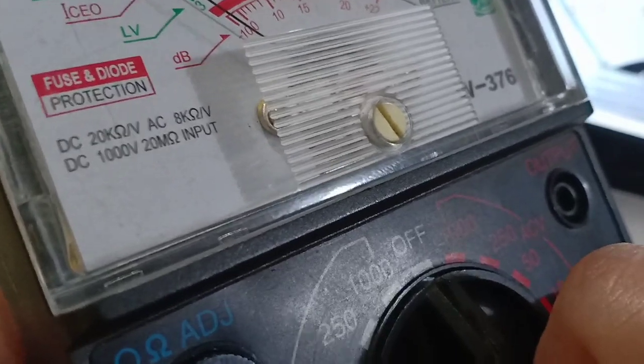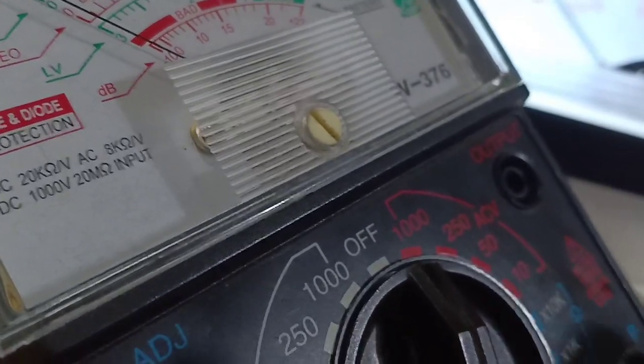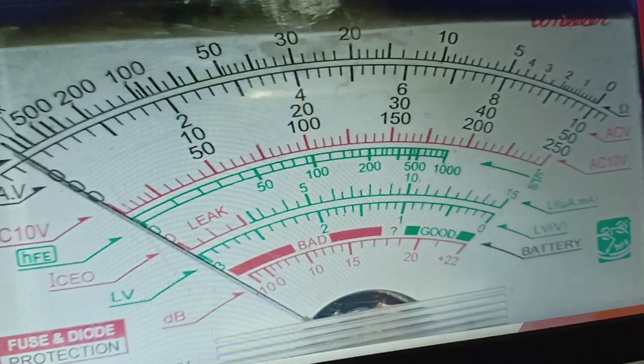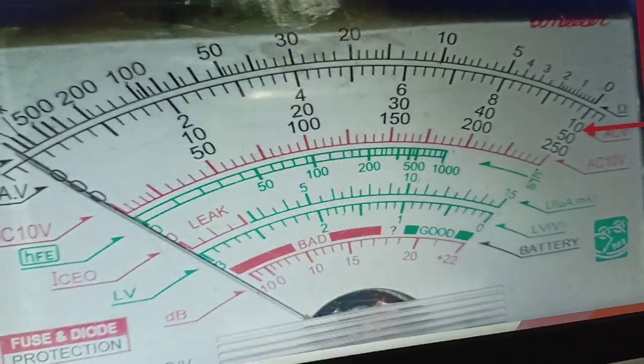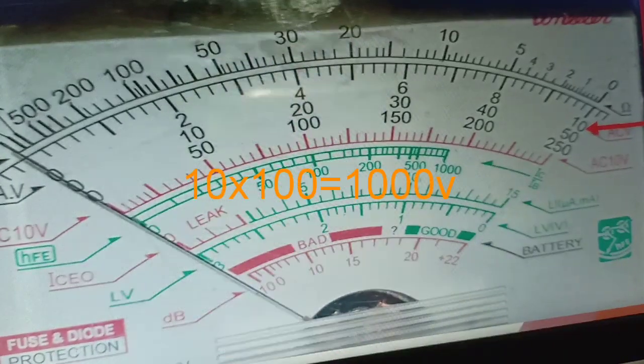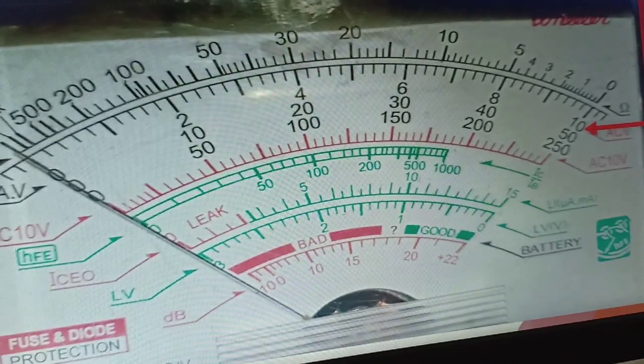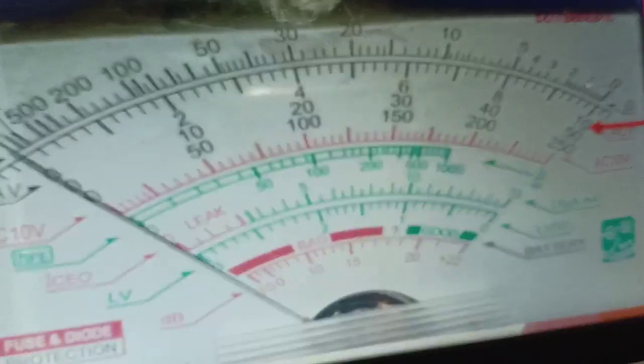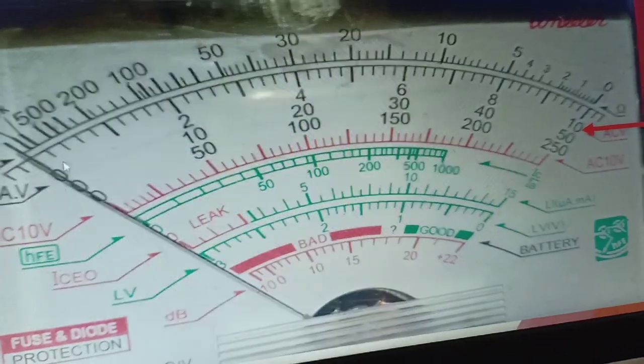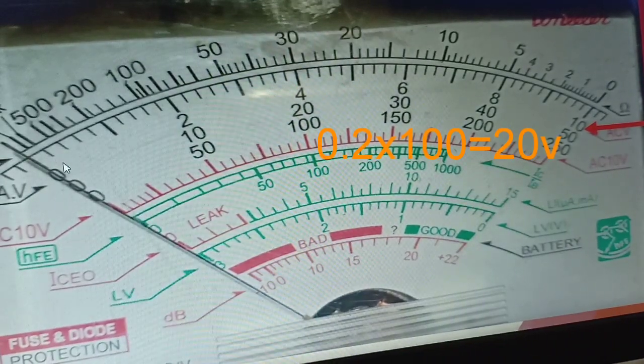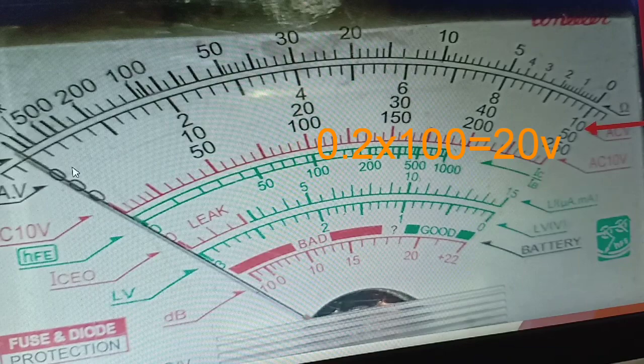Now, what if we are going to switch it or select the 1,000 volts? How are we going to read that? If we set that into 1,000 volts, let us refer to 10. We are going to multiply 10 by 100 to get 1,000. Therefore, each graduation is equivalent to 0.2 multiplied by 100. Therefore, each line, each deflection is equivalent to 20.